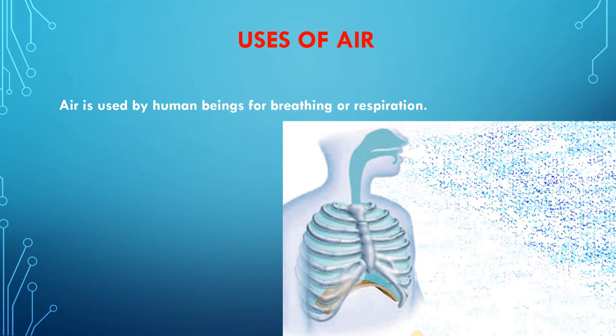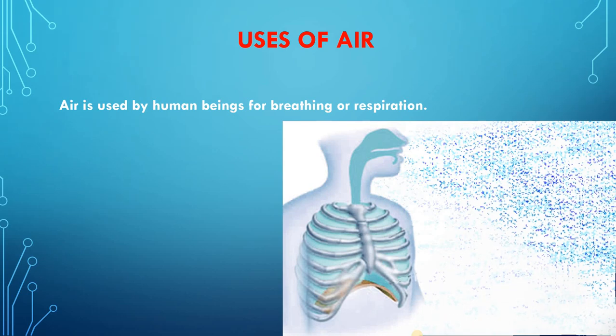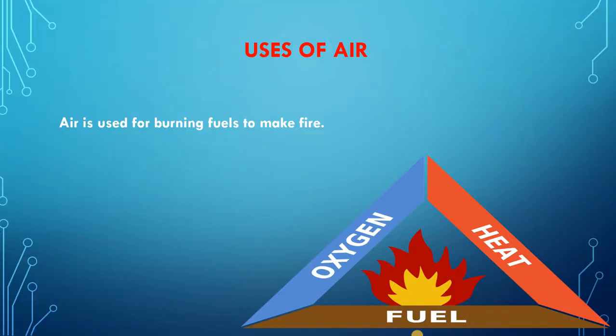Next comes a very important thing — what are the uses of air in our daily life? Air is useful for human beings in various ways. Number one, air is used by human beings for the process of breathing and respiration. No human being can survive without the oxygen of air, because in the presence of oxygen inside our body, food is burned and energy is liberated. That energy is utilized for our body to do all kinds of work. Next, air is used for burning fuels like wood, coal, and kerosene to make fire. This fire is used by man for cooking food and other heating purposes. No fuel can burn without the oxygen of air, so air is necessary for burning fuels.